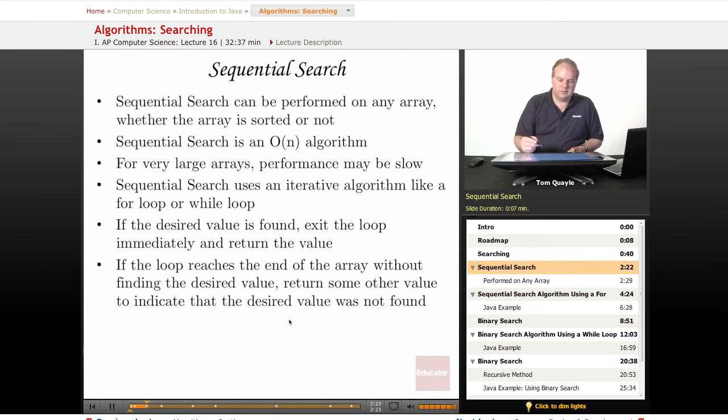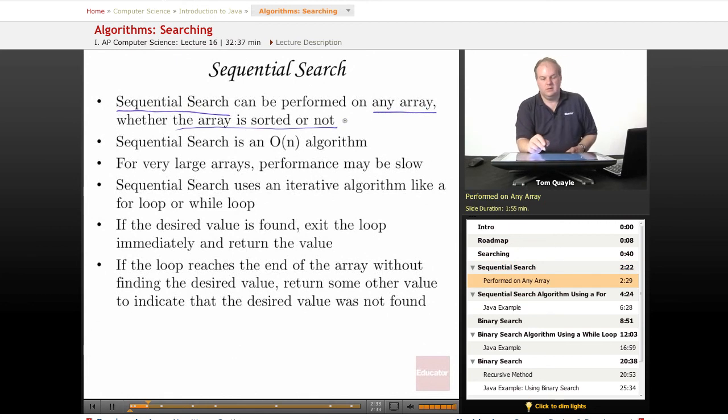The first type of search that we'll talk about in this lesson is sequential search. Sequential search can be performed on any array, whether the array is sorted or not. So if the array is not sorted, you must use a sequential search. If you're not sure if the array is going to be sorted, then you should use a sequential search.